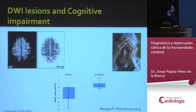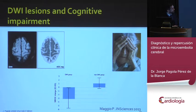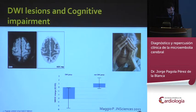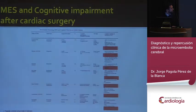Not only stroke could be the problem — we could also have cognitive impairment after microembolization. Looking at DWI lesions and the ADC map, one study found that in the group of patients who had DWI lesions after the procedure, the mini-mental examination score was lower. This is a good paper, but a key limitation is that the mini-mental examination is probably not the best test to assess this kind of cognitive problem.